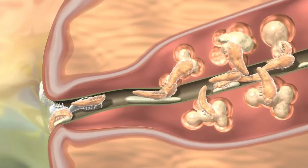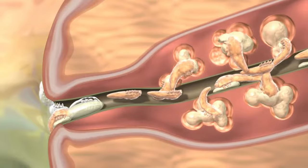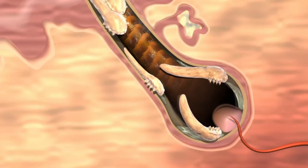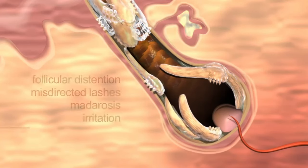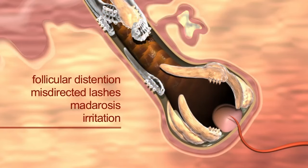This leads to more tissue damage and blockage of the glands and follicles, leading to further inflammation. The overgrowth of the mites in the follicle leads to follicular distention, misdirected lashes, madarosis, and irritation.